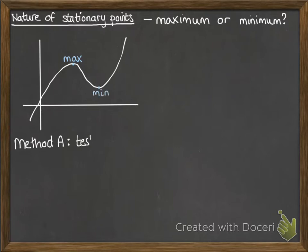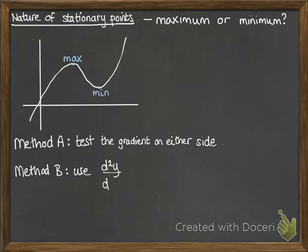And there are two ways of working out whether a coordinate you've found for a stationary point is a maximum or minimum. We can test the gradient on either side and see if it changes between positive and negative. Or we can use what's called the second derivative, which is noted as d²y/dx², and I'll show you both of these ways.